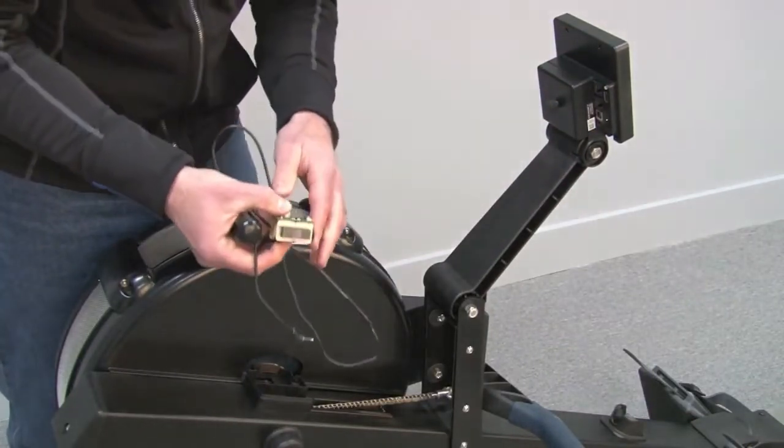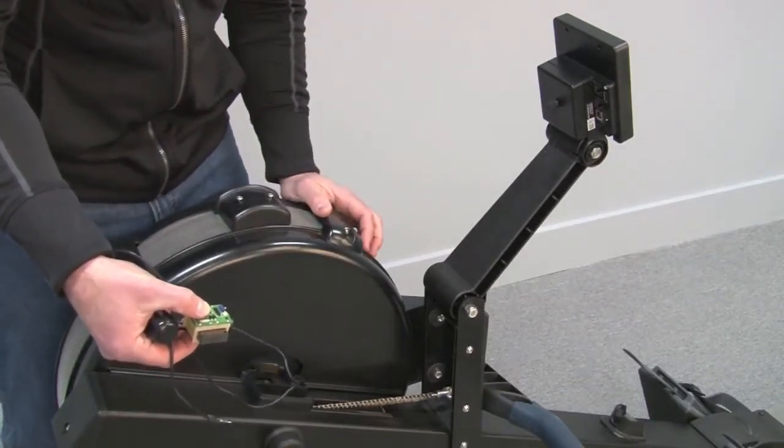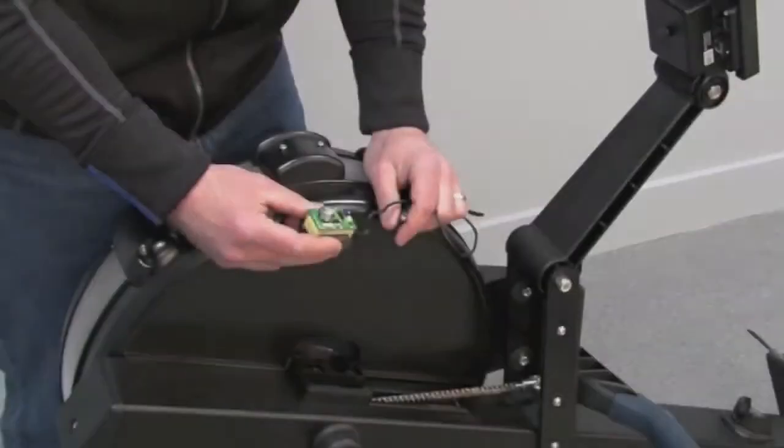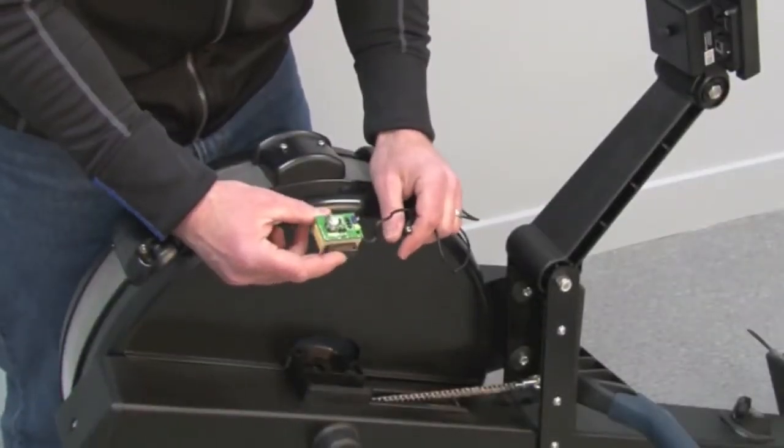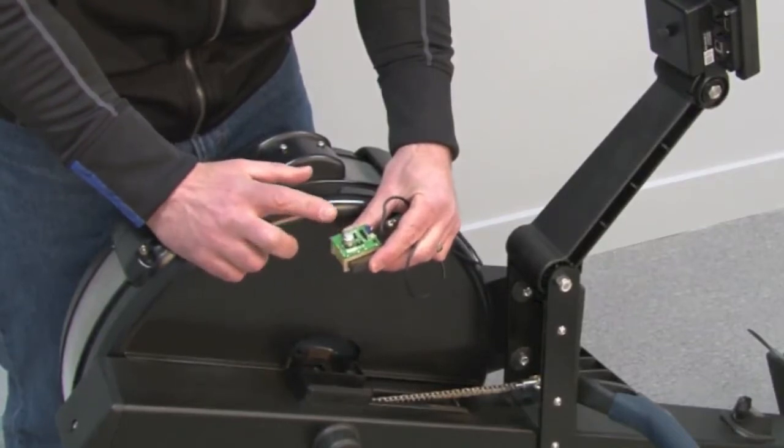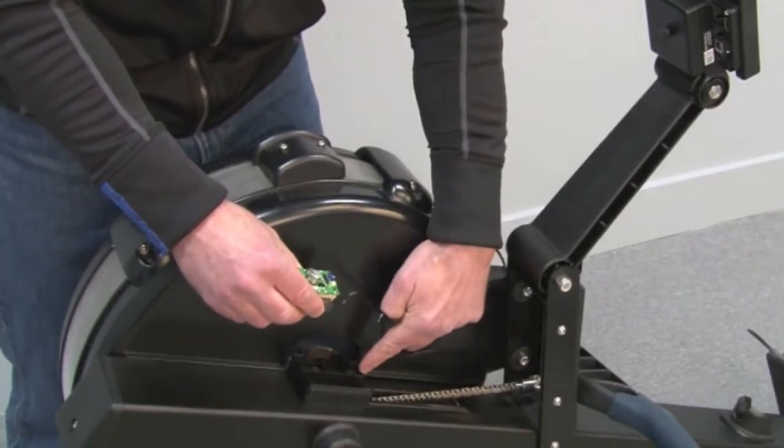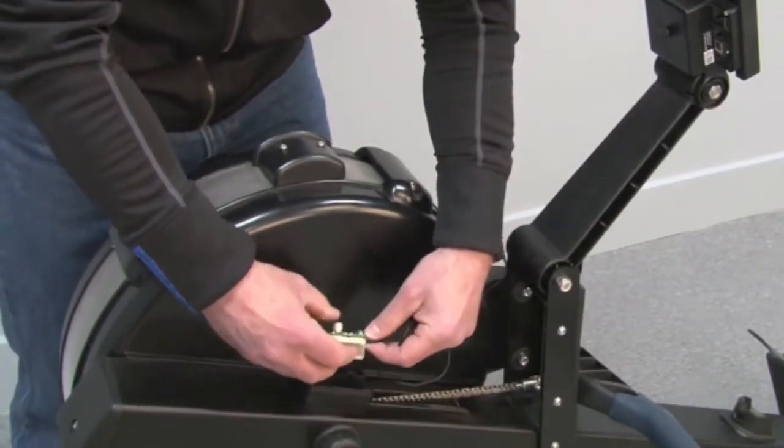Now that the old generator is removed, we'll put the new one in. When replacing the new generator, be sure to place it in the machine with the circuit board facing up and the wire coming out of the bottom of the generator base.